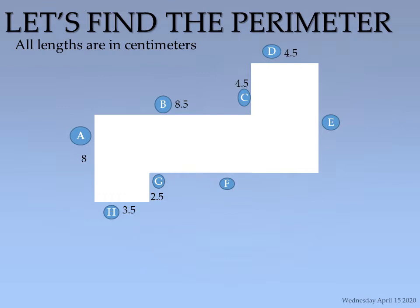We have eight sides on this shape and two missing sides. We have all the lengths and widths except for line E and line F. Line E is a width and line F is a length. We need to find both missing values. For line E, the corresponding widths are on line C and line A, but line A extends a bit beyond line E.